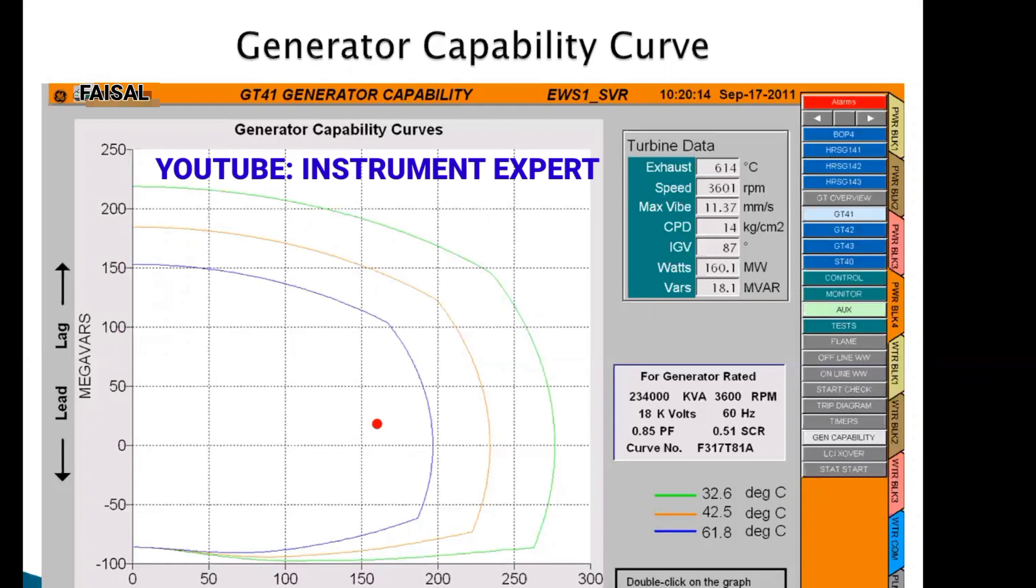This is showing the present location of the generator. If you read on the y-axis, the active megawatt is 160.1 megawatts, you can see here also, and VAR is 18.1 megawatts.